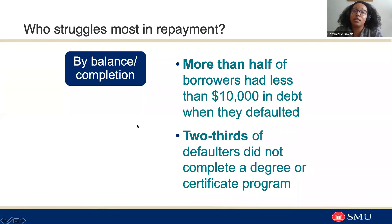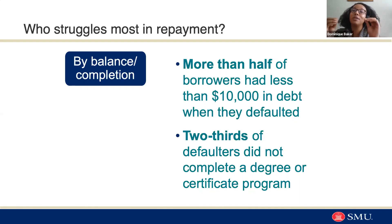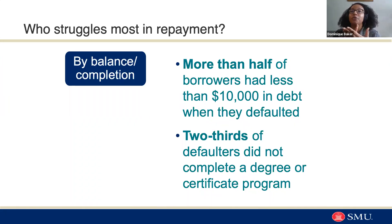We haven't talked as much about repayment around student loans. We've talked a lot about how students process financial aid within higher education and how much they borrow, so I want to wrap up quickly with repayment. A lot of concern around student loans is actually around whether you're able to manage the payments to pay off your student debt. When we talk about who struggles the most with repayment, more than half of borrowers had less than $10,000 in debt when they defaulted. Two thirds of all defaulters did not complete a degree or certificate program — the understanding being that they took out the debt but didn't get that boost from completing their credential.